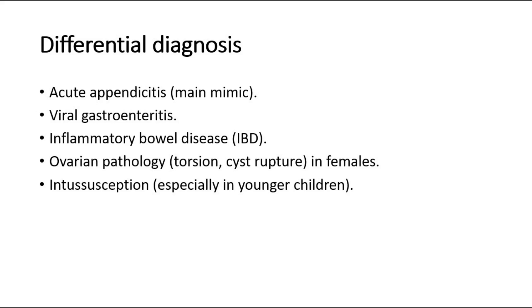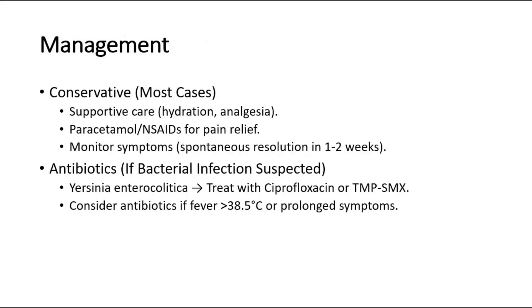The differential diagnosis includes acute appendicitis, which is the main mimic, viral gastroenteritis, inflammatory bowel disease, ovarian pathology such as torsion or cyst rupture in females, and intussusception, especially in younger children.